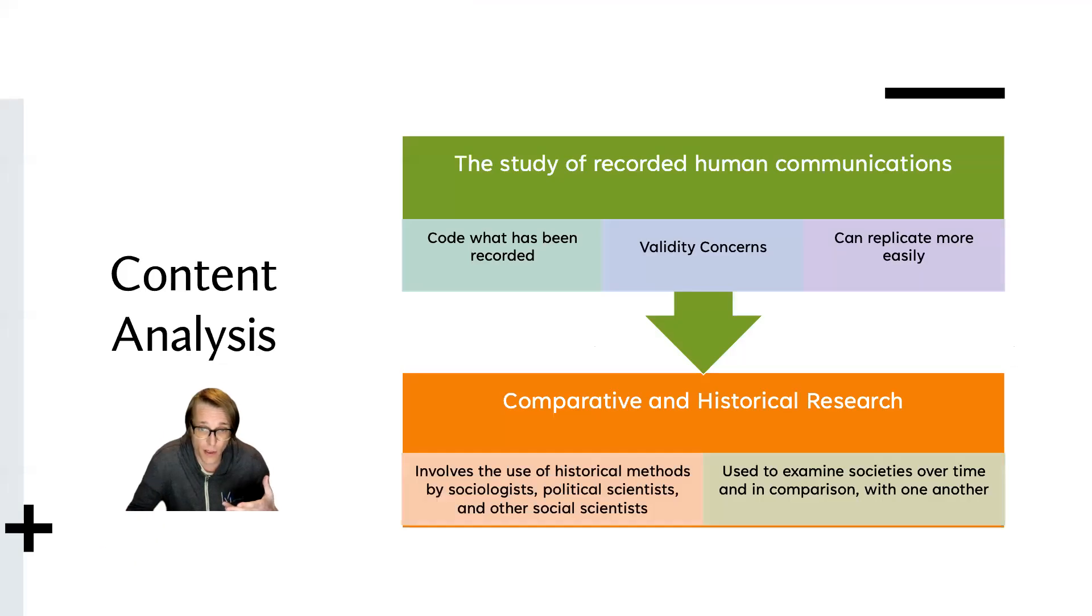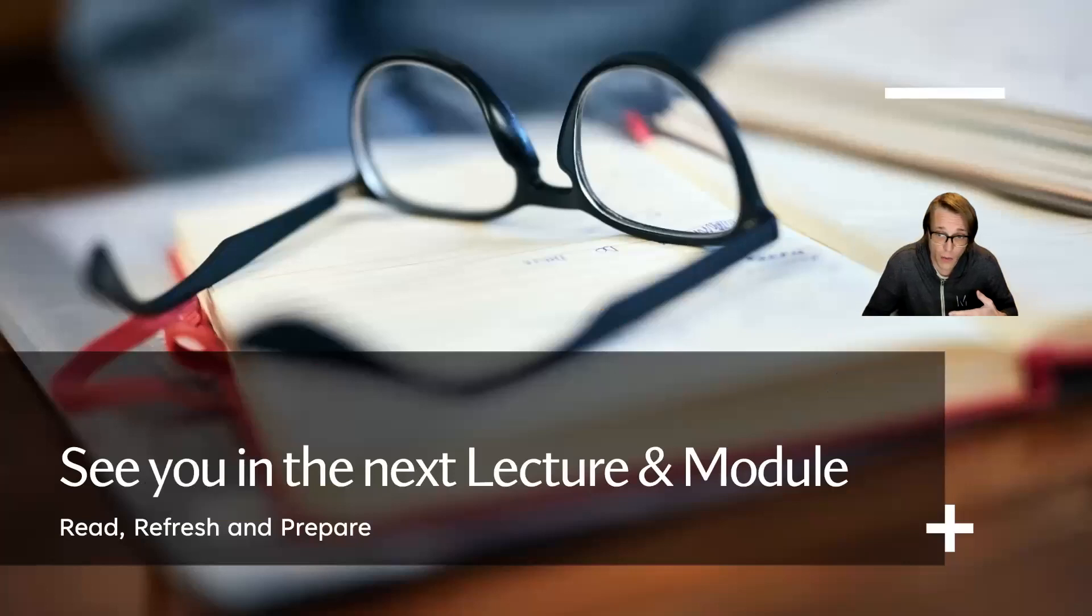Doing research that does not directly impact participants can be quite useful. Yet, as always, our research questions and purposes should be the guidelines, the methods we use to collect our data. This is very important. So looking at content analysis, the study of recorded human communications, code what has been recorded. Validity concerns, can we replicate more easily? Comparative and historical research. These are posted. Make sure you use it and pay attention to how we use these different types. Unobtrusive can be great. It's just a matter of circumstance of how we understand the data. Our research questions and purposes should guide the method we use to collect our data. Point blank center. This is a quick lecture. I'll see you next lecture. I hope you continue reading and you're enjoying what you're reading. Make sure you're staying on track. See you next lecture.